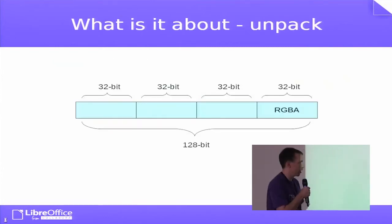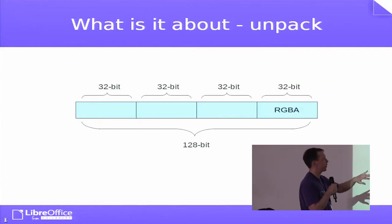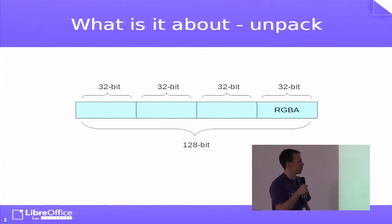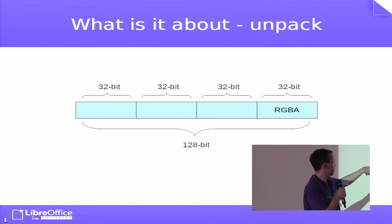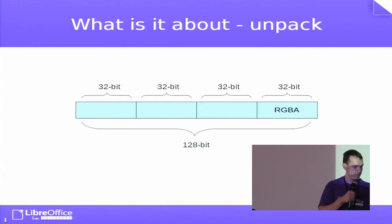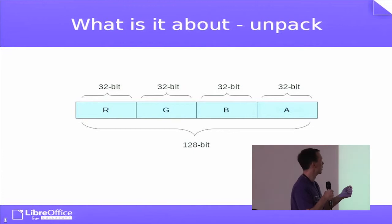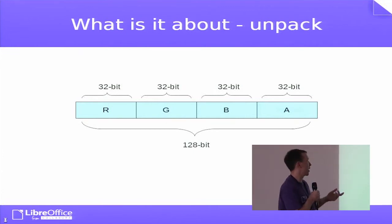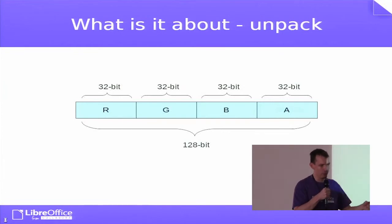So how do you usually do it? You have RGBA, 32 bits, 1 pixel. And what you want to do is to extend this to a 128-bit register like this here. This is the first step. You need 32 bits — 16 bits would be enough for the operation, but 32 bits are needed because of overflow.